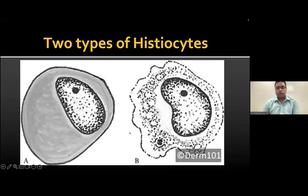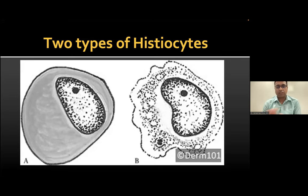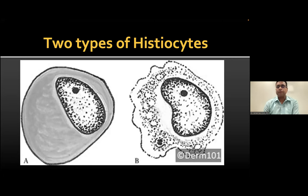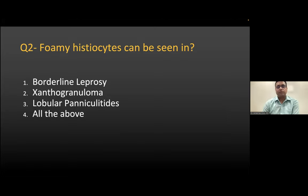There are essentially two types of histiocytes. The first is the epithelioid histiocyte, which has a slipper-shaped nucleus and resembles an epithelial cell. The second is the foamy histiocyte, which has a foamy cytoplasm. The nucleus in both types is similar — it's primarily the cytoplasm that differs. The cytoplasm of an epithelioid histiocyte is clear with a slightly eosinophilic hue, whereas the foamy histiocyte has a foamy cytoplasm.